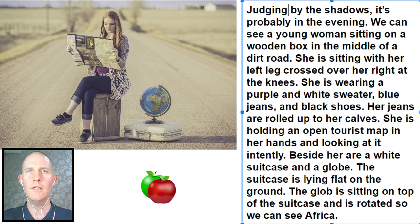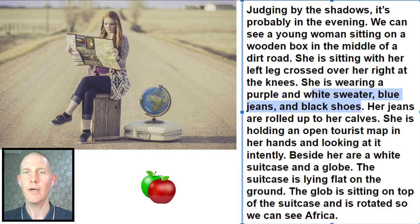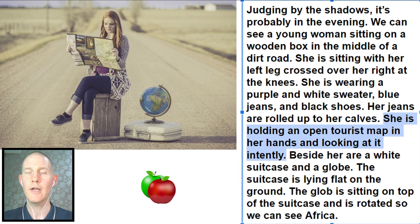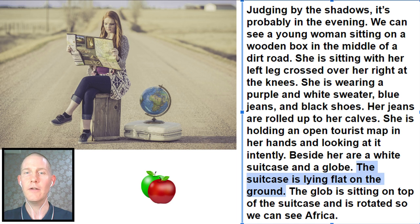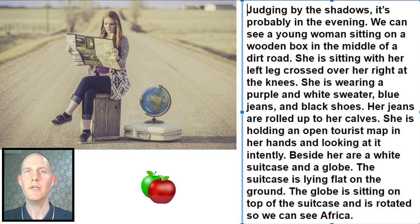Judging by the shadows, it's probably in the evening. We can see a young woman sitting on a wooden box in the middle of a dirt road. She is sitting with her left leg crossed over her right at the knees. She is wearing a purple and white sweater, blue jeans, and black shoes. Her jeans are rolled up to her calves. She is holding an open tourist map in her hands and looking at it intensely. Beside her are a white suitcase and a globe. The suitcase is lying flat on the ground; the globe is sitting on top of the suitcase and is rotated so we can see Africa.